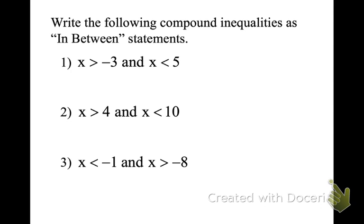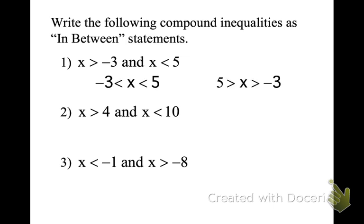I'm going to write an in-between statement for the next one. We take the lower number, negative 3, the larger number, and x is in the middle: x is bigger than negative 3 and x is less than 5. One thing you would never do is write 5 is greater than x — we always start with the lower number on the left. If you write it like this, I will mark it wrong.